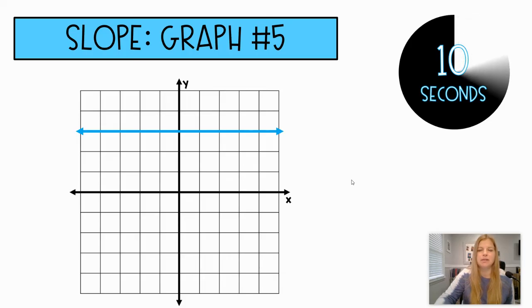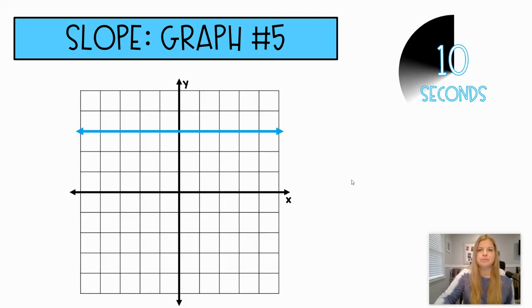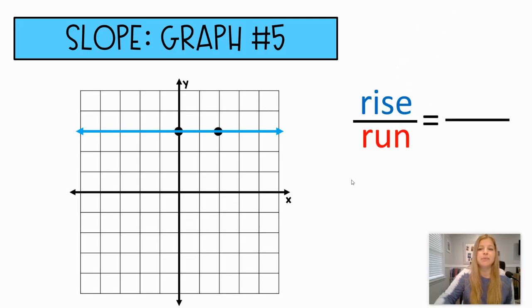What about this now, a horizontal line? So for this one, I could rise zero. I don't have to go up or down to get to the next point, and run two, let's say. Zero divided by anything is just zero. So that is what a zero slope would look like. It's a horizontal line.